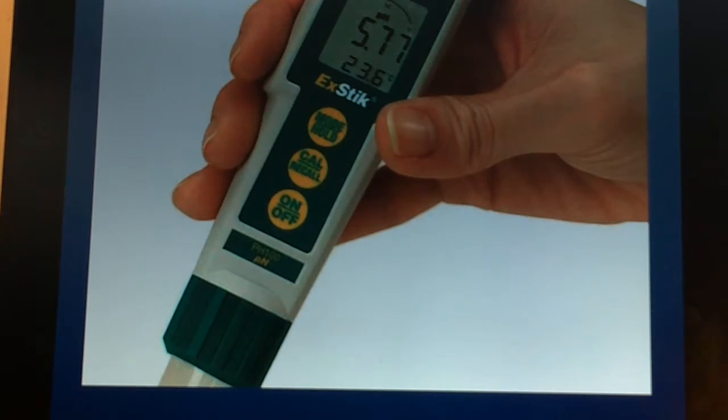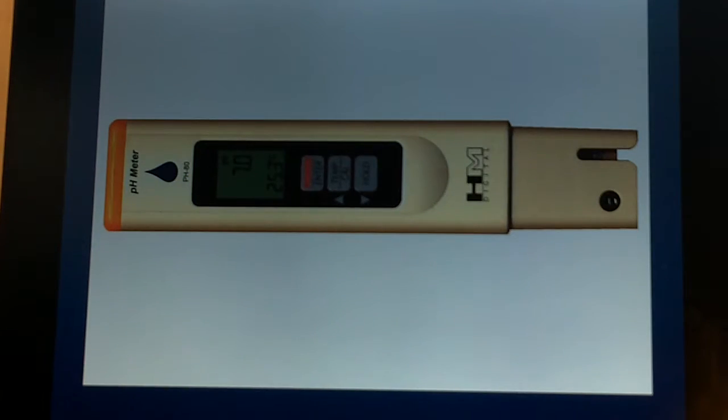This right here is an HM Digital, this is sometimes referred to as like a pH pen. Again with this it's water resistant so if there's moisture on your hands or moisture in the area it's fine, but it is not waterproof. If you drop it in, and I've seen that happen a lot in the field, people drop a meter into the water into the reservoir they're using and this thing at that point is no longer good, it would fry it in the water.